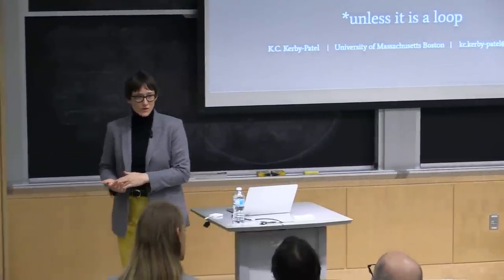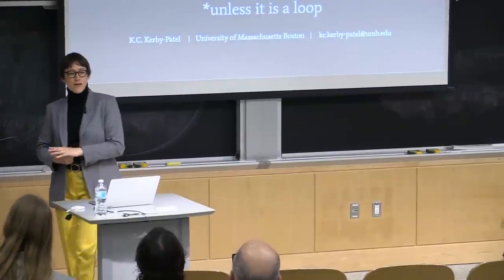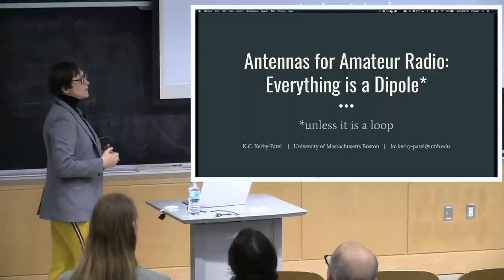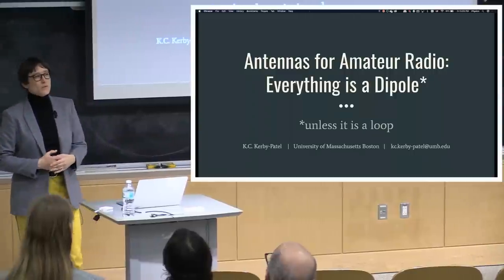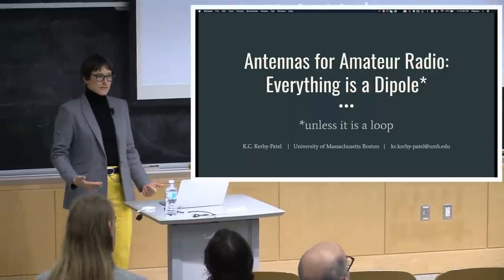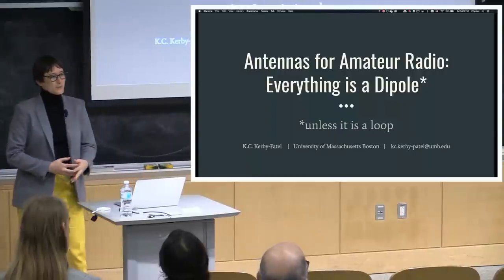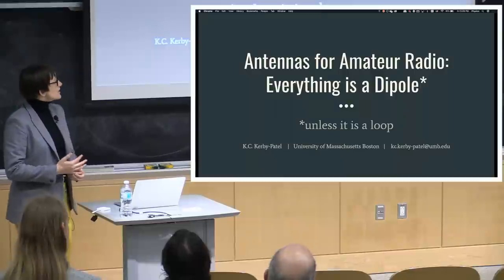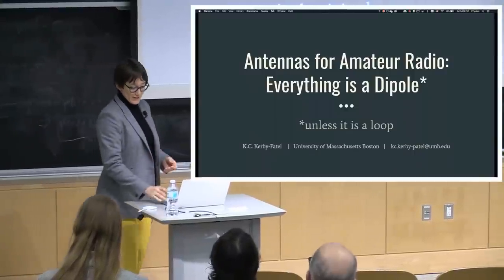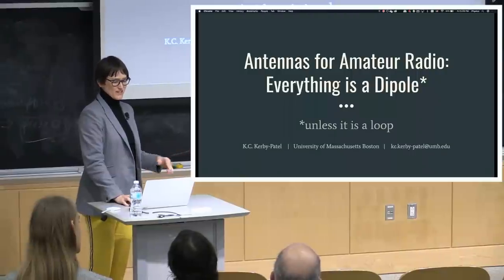Since this is a radio club seminar, this talk is designed around antennas for amateur radio. I'm going to start with how radiation happens and how it works, then go through the basic types of antennas and why they work the way they do, how we evaluate whether an antenna is working and what metrics we use, some constraints for the most common types of antennas, and towards the end, some current research where we try to work around those fundamental constraints. I'm going to prove that everything relevant to you as amateur radio operators is a dipole—unless it's a loop.